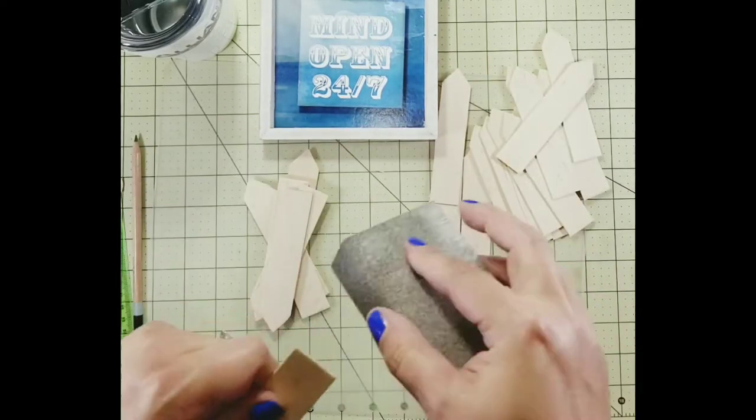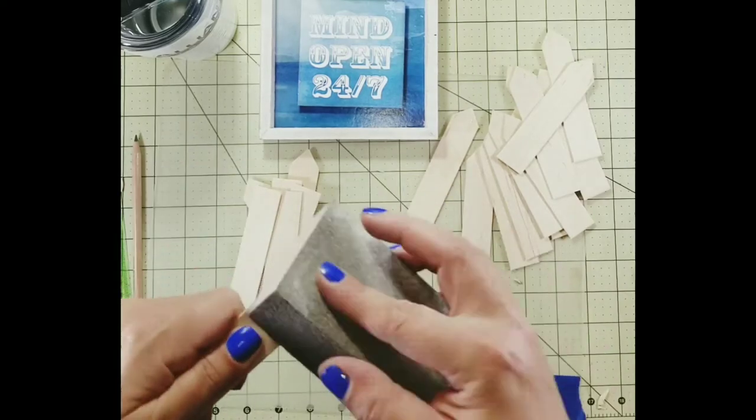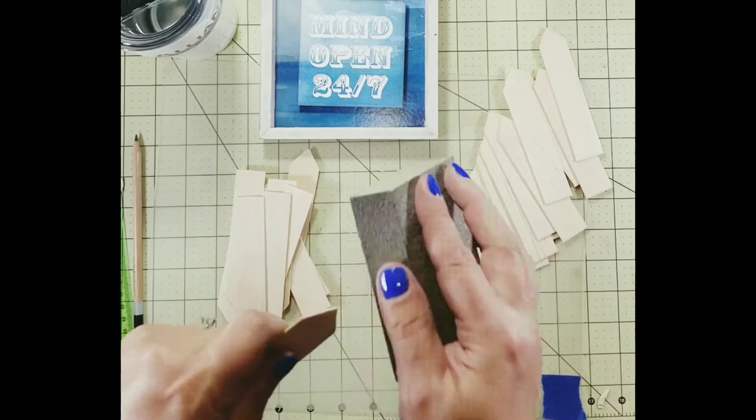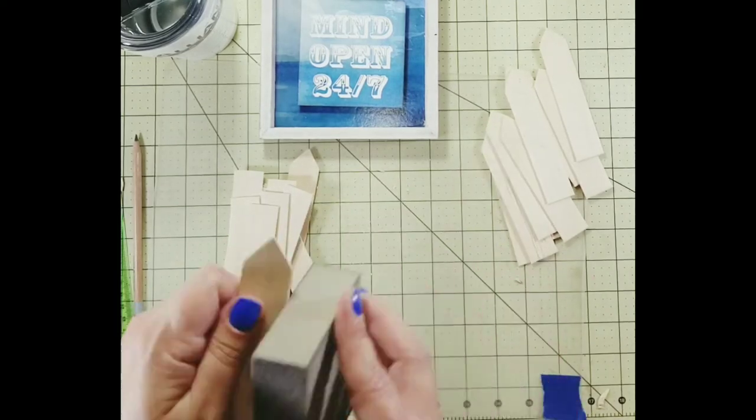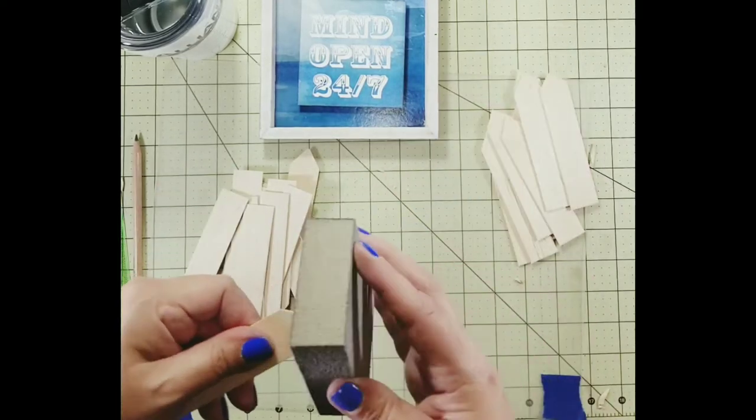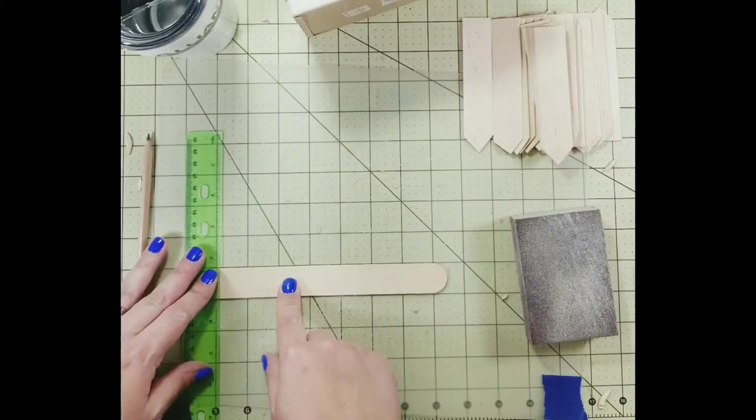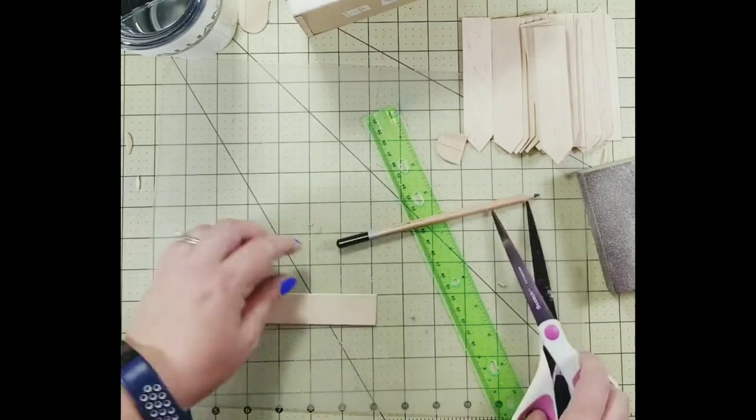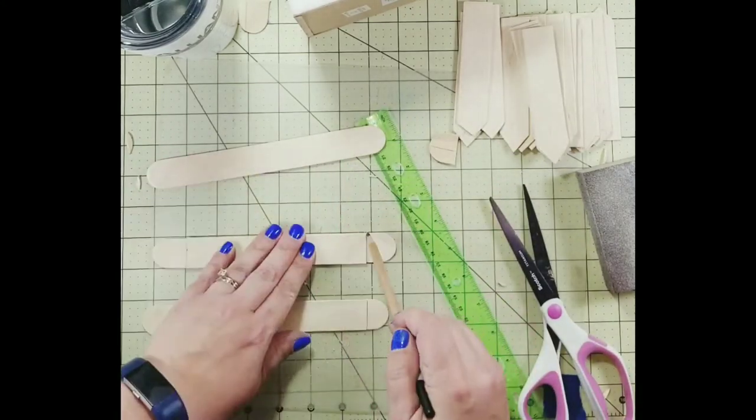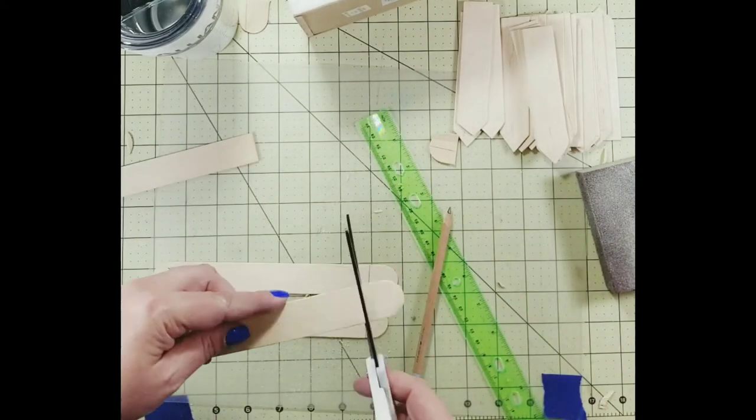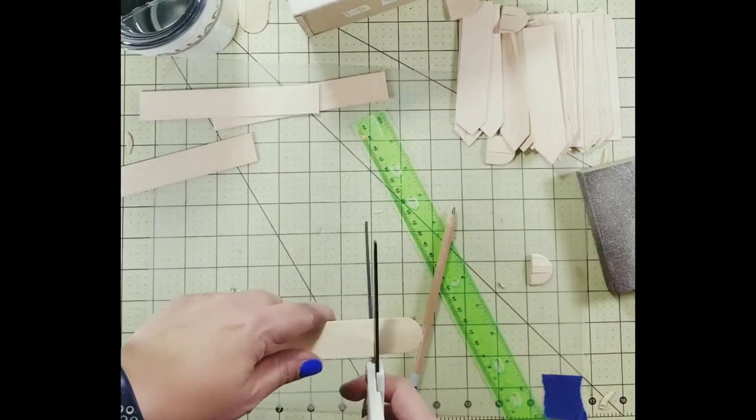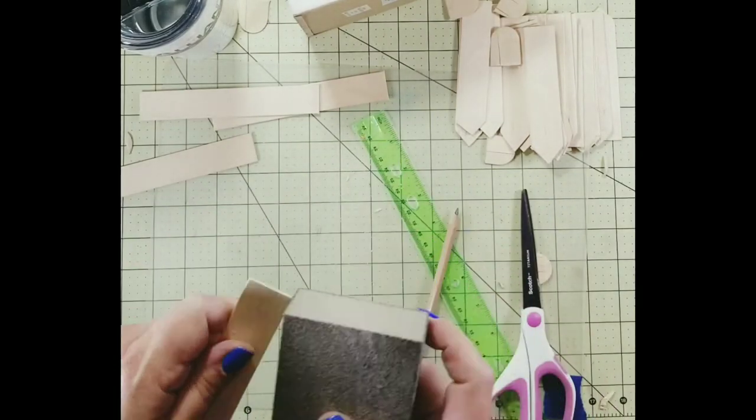From the Dollar Store I also picked up that shadow box you see at the top. It's just a square shadow box and you can pick those up pretty much year-round. We're going to use that shadow box for the base of our project. I measured along the length of that shadow box and then measured that same number onto the popsicle sticks. You just want to cut off each end of the craft sticks so there aren't any rounded edges.